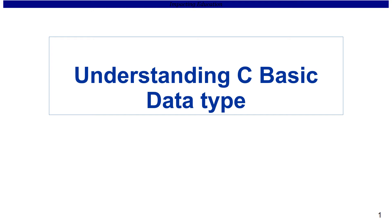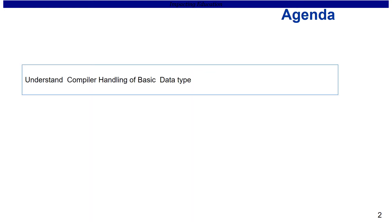Hi, welcome to this lecture on understanding C basic data types. In this lecture we are going to see how the compiler handles basic data types. The basic data types of interest are integers, short, character, and long, but we will be focusing on integer and short.